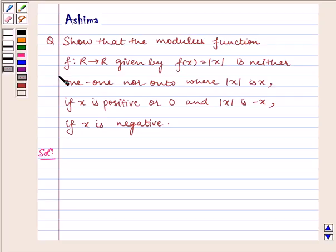Show that the modulus function f: R to R given by f(x) = |x| is neither one-one nor onto, where |x| is x if x is positive or 0, and |x| is -x if x is negative. Now, f is not one-one.